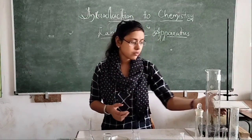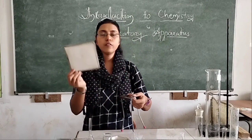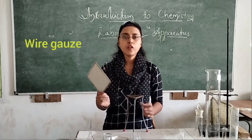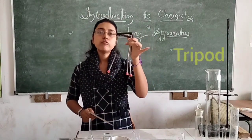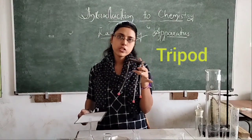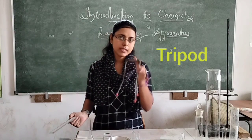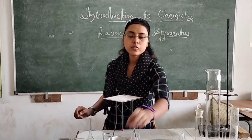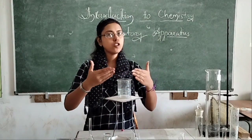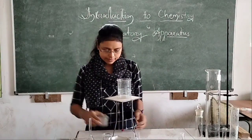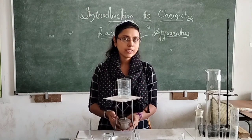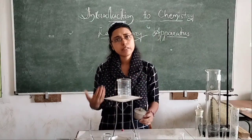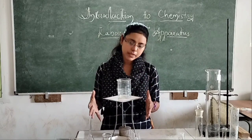The next apparatus we are going to see in our lab is the wire gauze. This wire gauze is used on a tripod stand, which we generally use to heat any solution and also in crystallization experiments. Over the tripod stand we keep the wire gauze, and over the wire gauze we keep our apparatus or the solution we are going to heat. At the bottom we keep our source of heat — like a Bunsen burner or a spirit lamp.